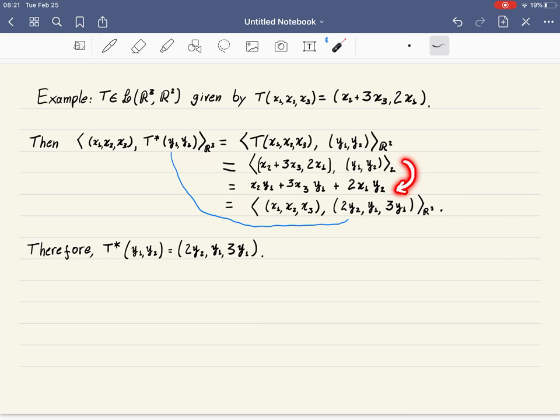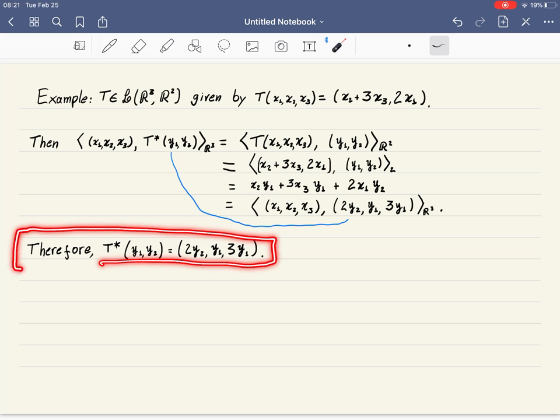Then we regroup them by putting x₁, x₂, x₃ on the left and seeing what are the coefficients in terms of y₁, y₂ that we get. Once we did this, we have found what is the adjoint of T evaluated at some vector. The adjoint of T goes from R² to R³.